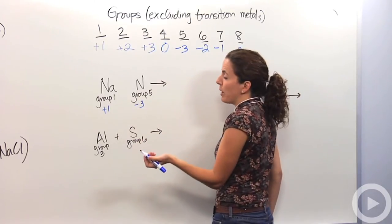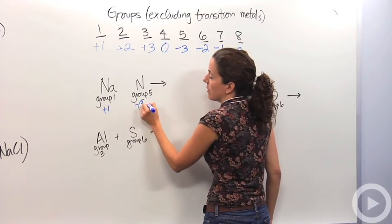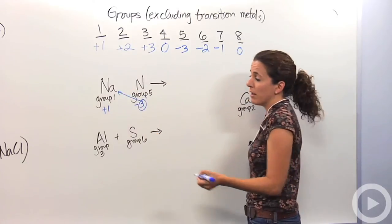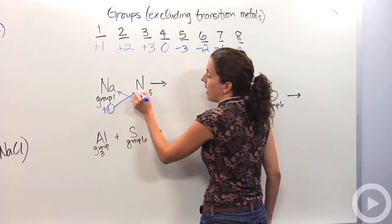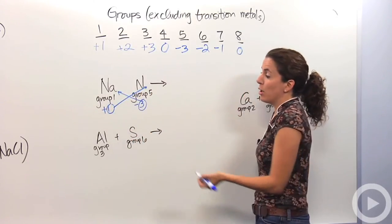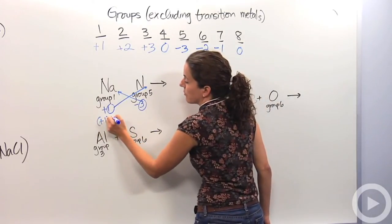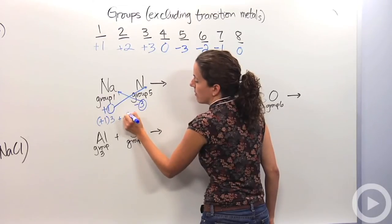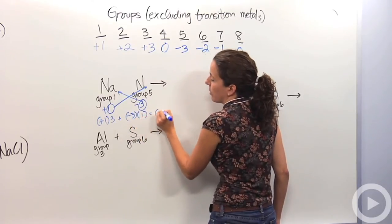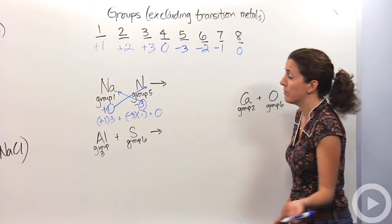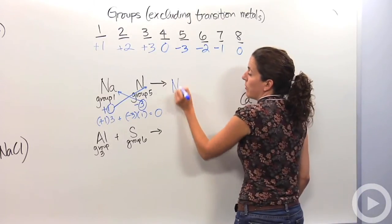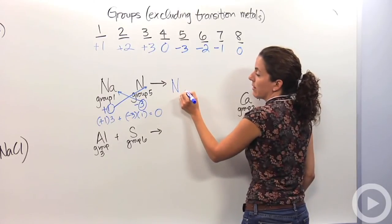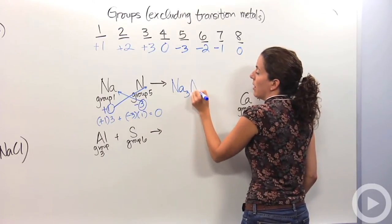Well an easy way to go about doing this is this number, ignore the sign, is going to be how many sodium atoms there are. This number is going to be how many nitrogen atoms there are. Because if we do plus one times three, and negative three times one, we're going to get an overall charge of zero, which is great, which is exactly what we want. So we're going to end up with an ionic compound that looks like this.